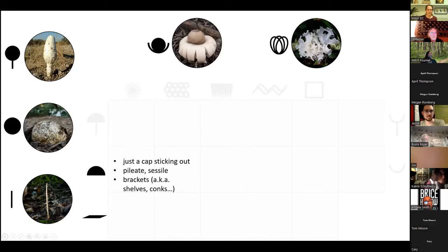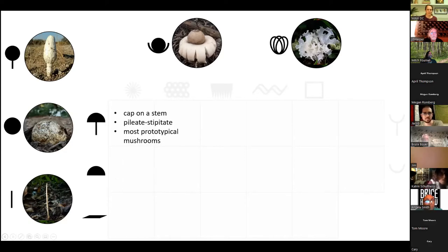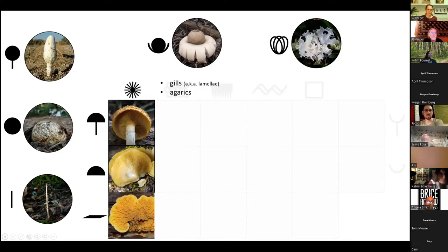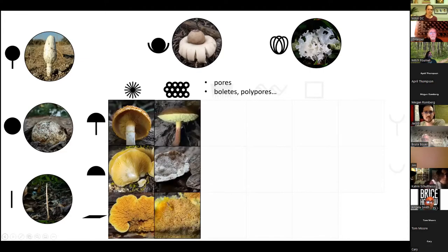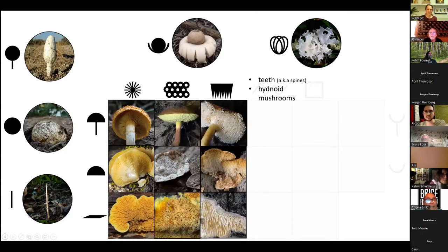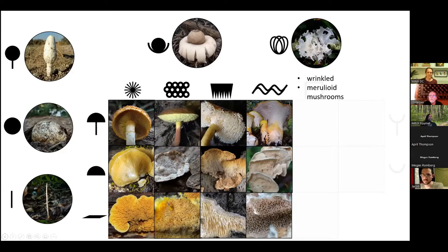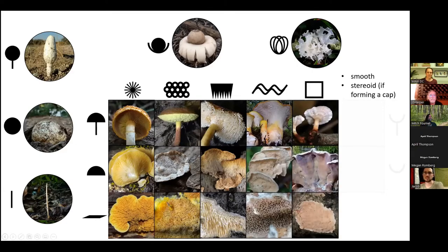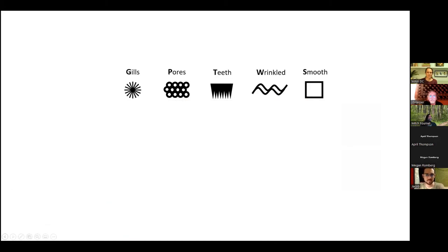Some brackets get called shelves or conchs. The most famous ones have pores, but obviously not all of them. And of course, you can have a cap on top of a stem — pilate stipitate — meaning it has a cap and it has a stem. All of the most prototypical mushrooms that probably most people think of first when they hear the word mushroom are going to be on that base. On top of all those three shapes, we could have gills and it'll be called an agaric. It could have pores and it'll be a bolete or polypore. It could have teeth or spines — a hydnoid mushroom. It could have wrinkles — a merulioid mushroom. And it could be smooth.